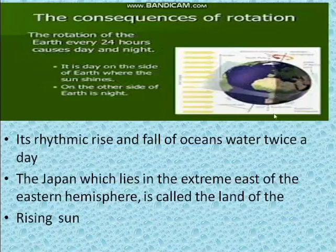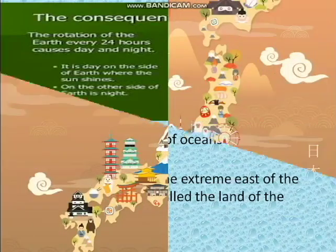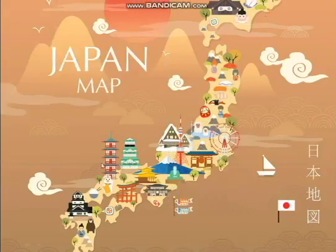It is a rhythmic rise and fall of ocean water twice a day. Japan is one of the countries which lies in the eastern extreme of the eastern hemisphere. It is called the land of the rising sun.